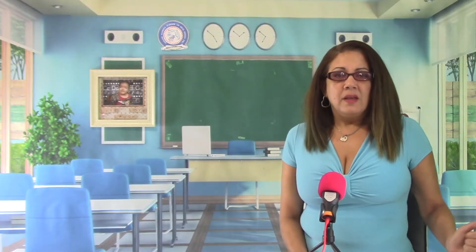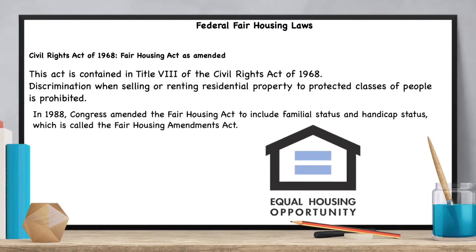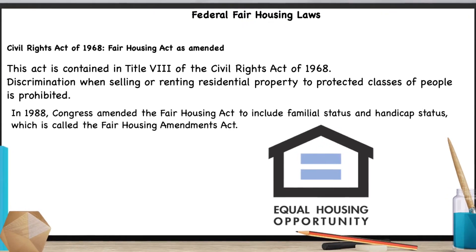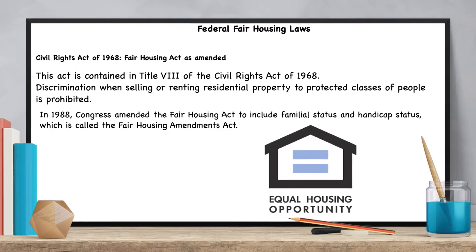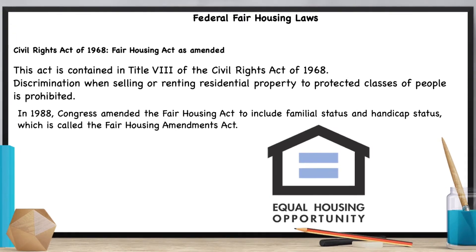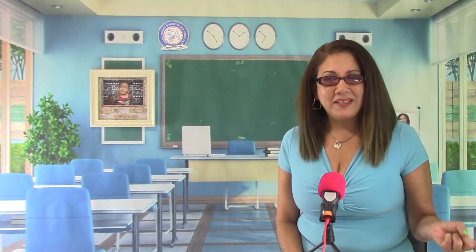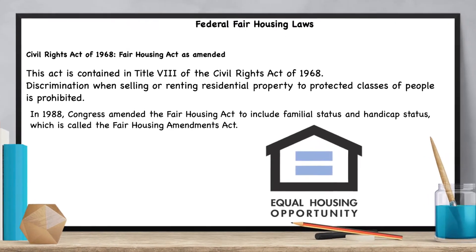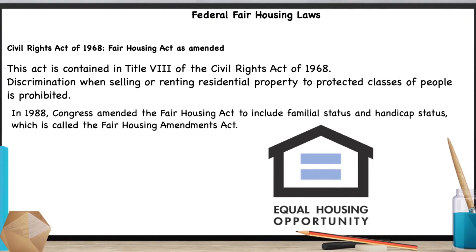The Fair Housing Act is contained in Title 8 of the Civil Rights Act of 1968. The Fair Housing Act of 1968 prohibits discrimination on the basis of race, color, religion, sex, and national origin when selling or leasing residential property.